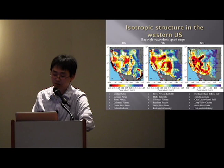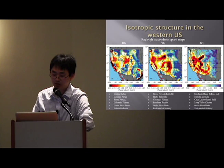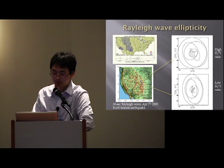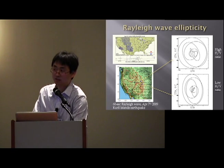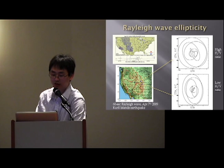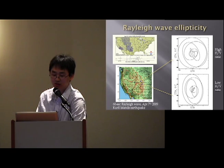At 80 seconds, we start to see mantle features, including the subduction of the Juan de Fuca Plate as well as the Snake River Plain. Overall, again east-west we see very different velocity structures. Another advantage of USArray is that we can use receiver terms that traditionally we did not use in tomography methods.